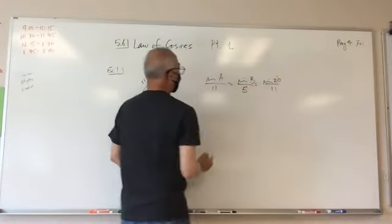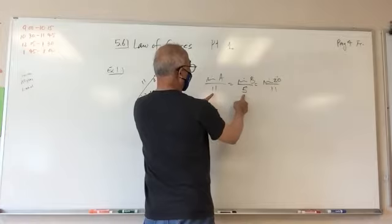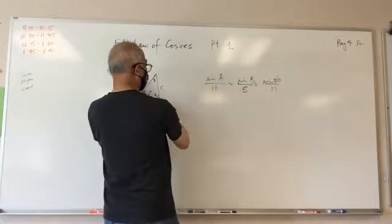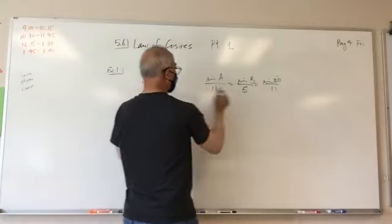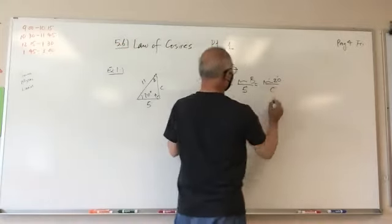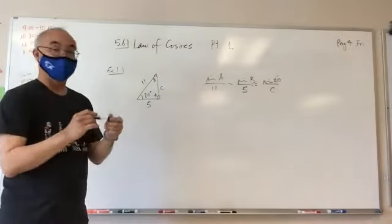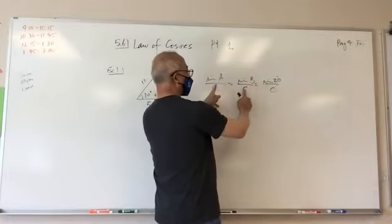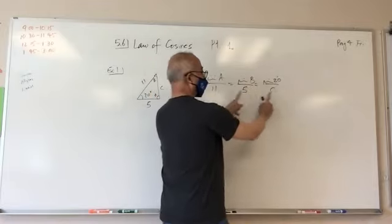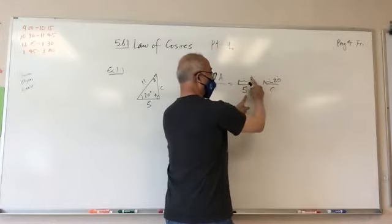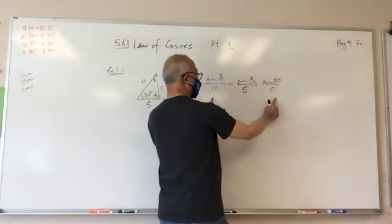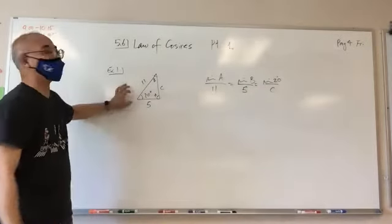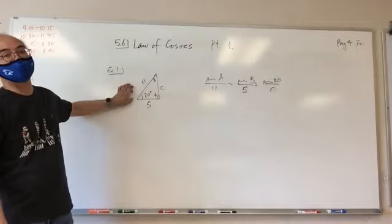So obviously I can't use these two because I have two unknowns. If I do this one, again I have two unknowns. This is exactly when you cannot use the Law of Sines - you are forced to use the Law of Cosines.